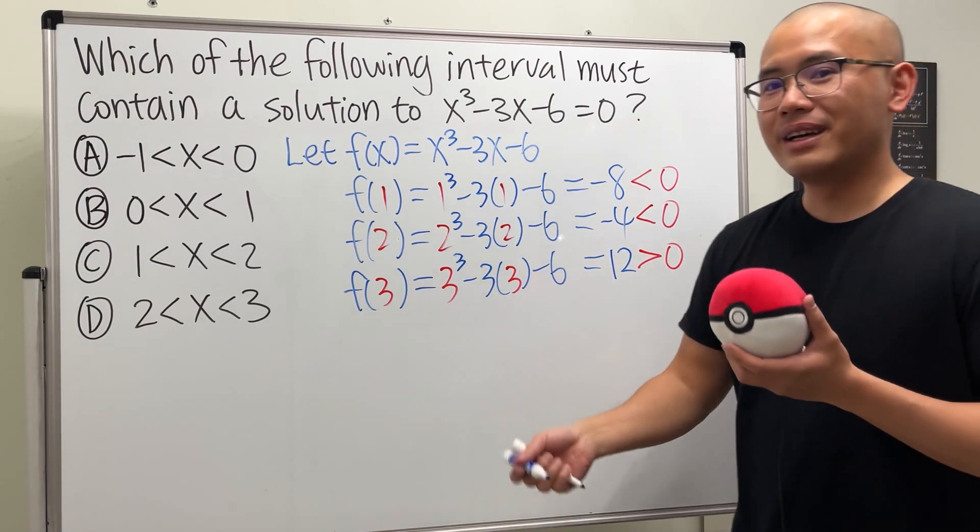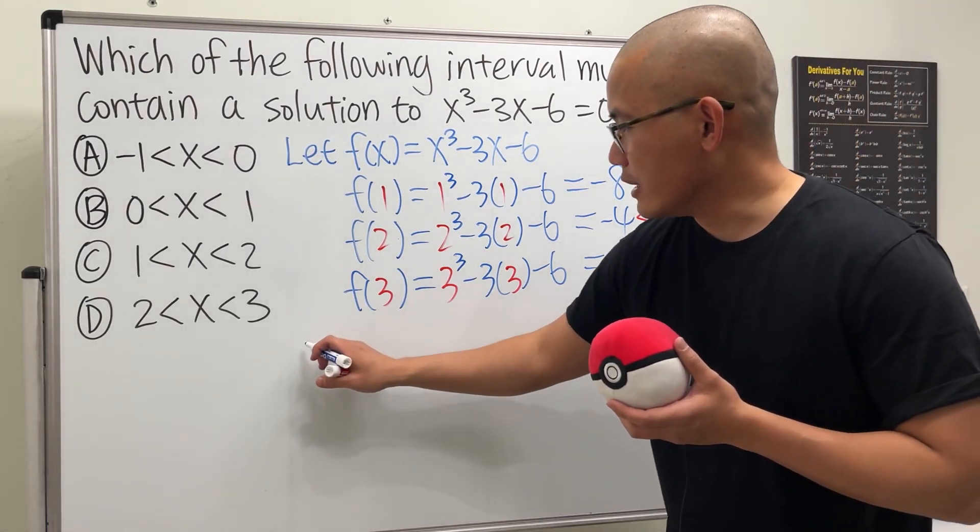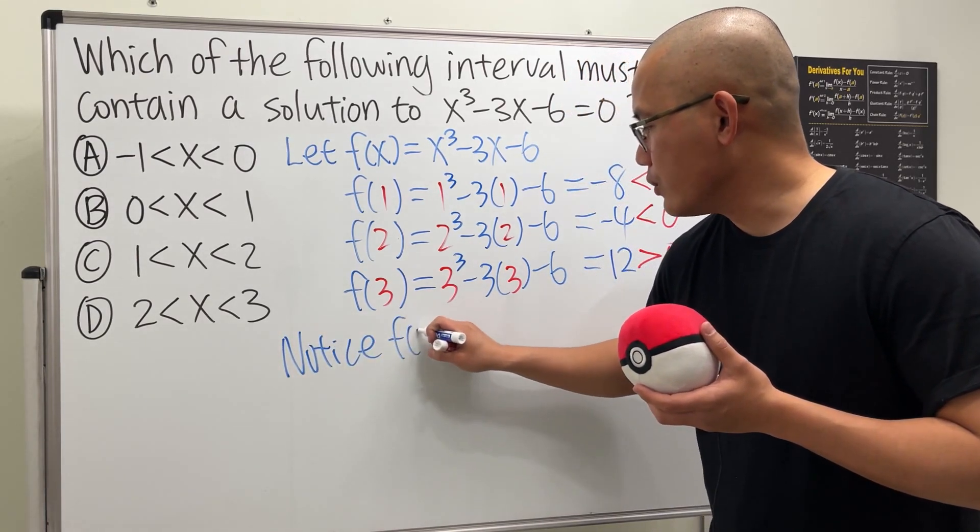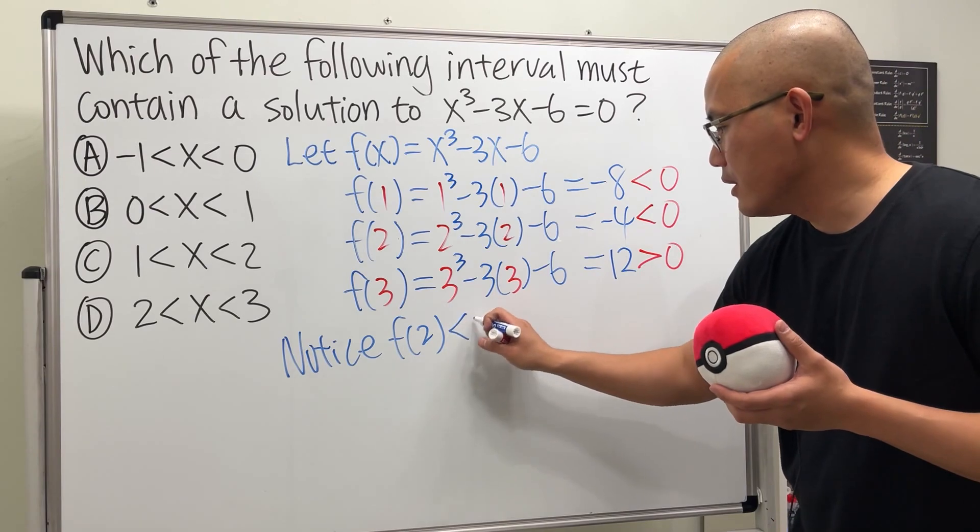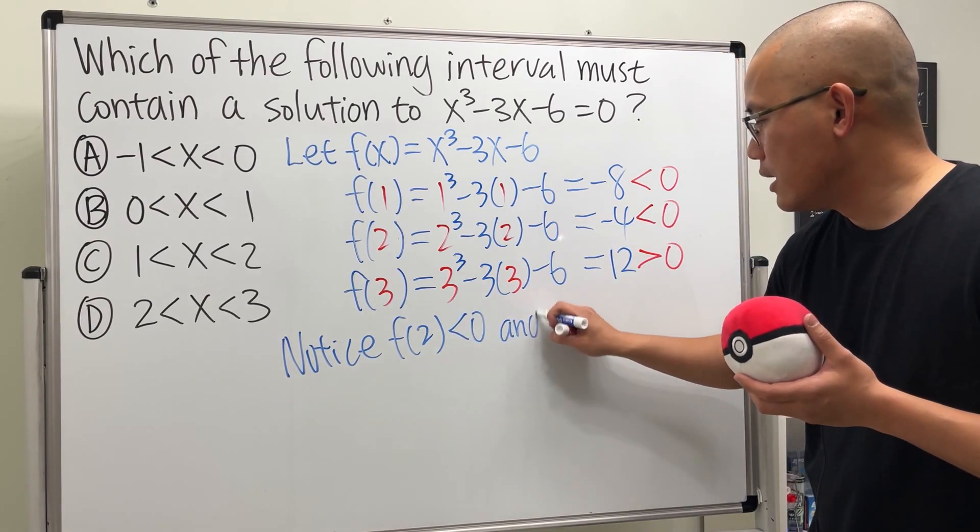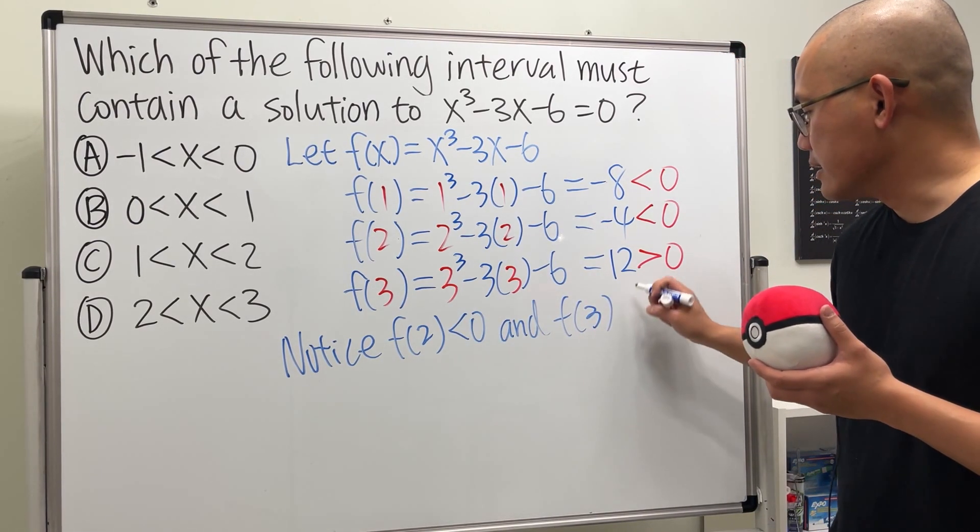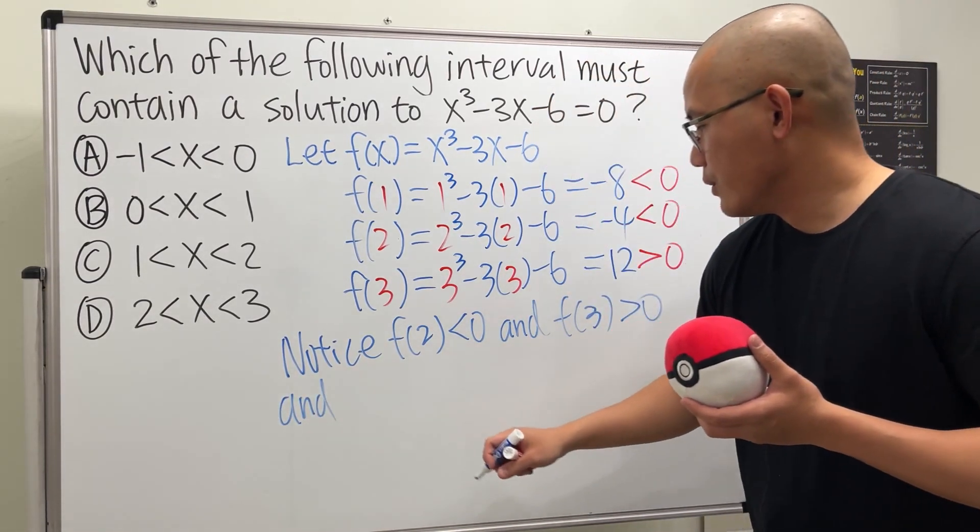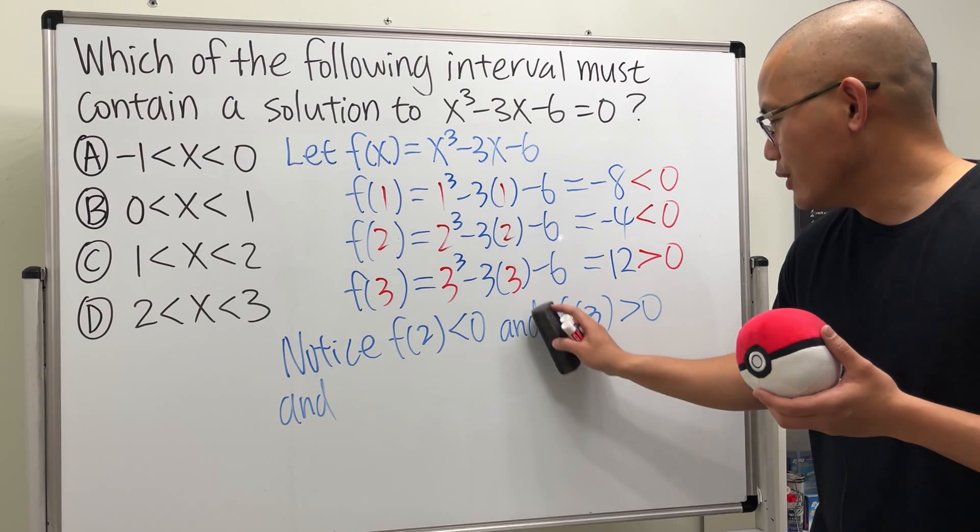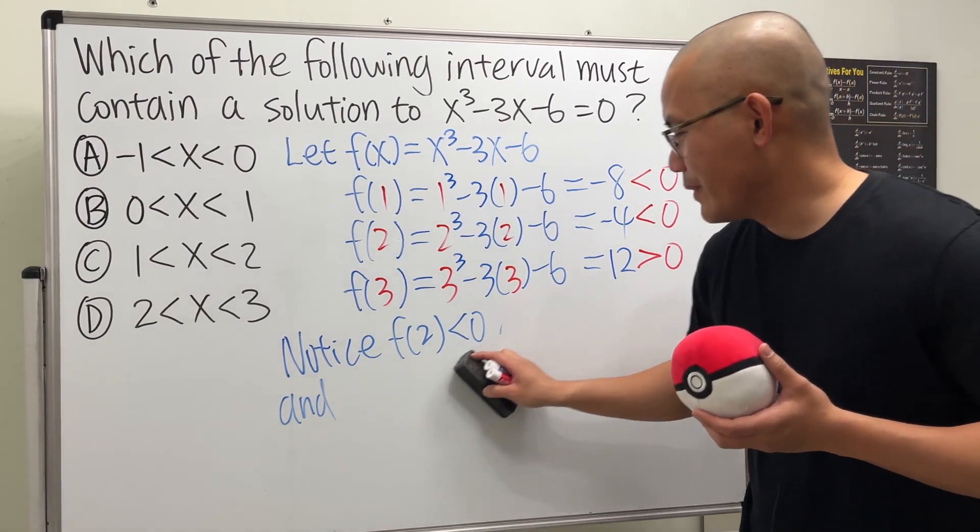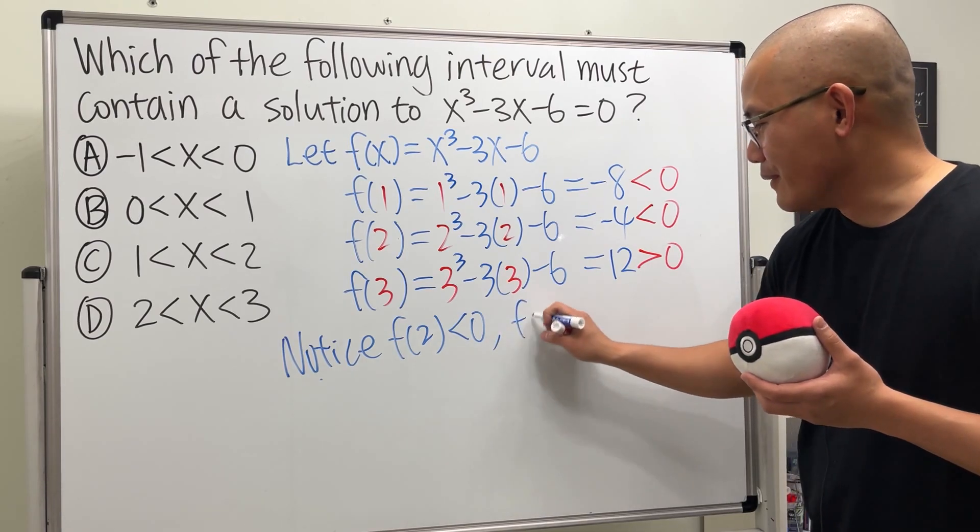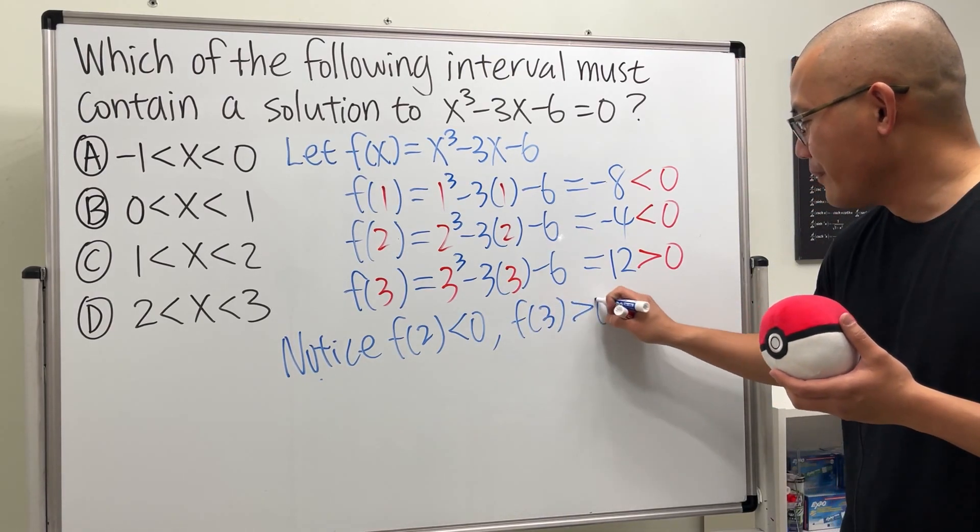And this is how you can write down the conclusion. I'm just going to say something like, notice f(2) is negative and f(3) is positive. Well, I shouldn't put n and n like so many times. I'm just going to write it down like this. f(2) is negative, comma, f(3) is positive, comma.